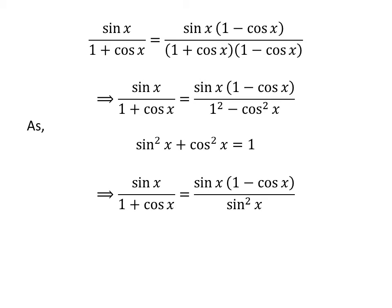So, applying this trigonometric identity in the denominator of the right hand side of our latest equation gives us: sine of x upon 1 plus cosine of x is equal to sine of x times 1 minus cosine of x, upon square of sine of x.